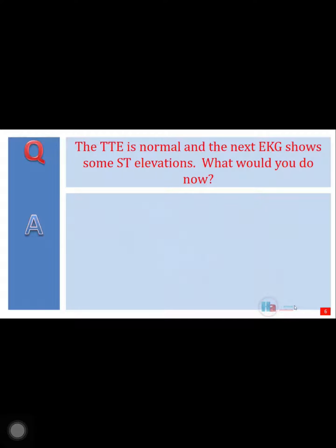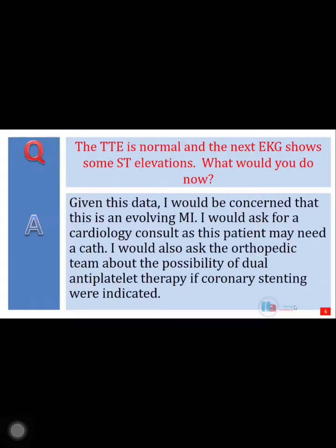The transthoracic echo is normal, and the next EKG shows some ST elevations. What would you do now? Given this data, I would be concerned that this is an evolving MI. I would ask for a cardiology consult, as this patient may need a cath. I would also ask the orthopedic team about the possibility of dual antiplatelet therapy if coronary stenting were indicated.